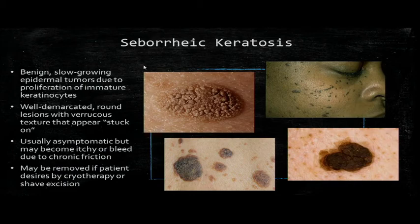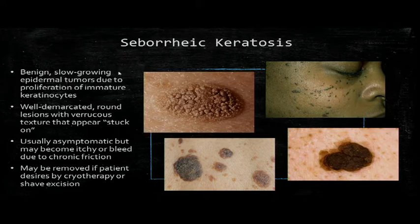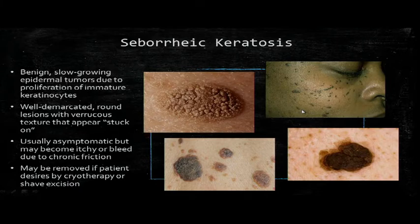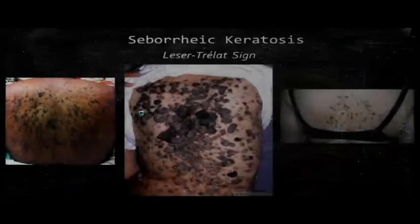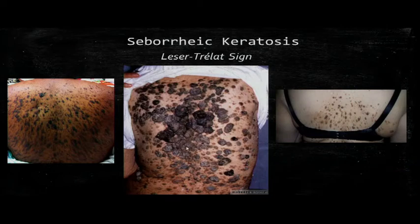Seborrheic keratosis refers to benign slow-growing epidermal tumors that usually develop after age 50 but can occur in young adulthood as well. They are characteristically well-demarcated round lesions with a verrucous texture that appears stuck on. Genetics may play a role in people who have a lot of them. Depending on the amount and how fast they appear, they can be associated with malignancy. Along with acanthosis nigricans or skin tags, this is known as the Leser-Trélat sign. They can often be confused with melanoma, so use the ABCD guidelines to help determine the need for biopsy. They may also have a Christmas tree distribution along Blaschko's lines.